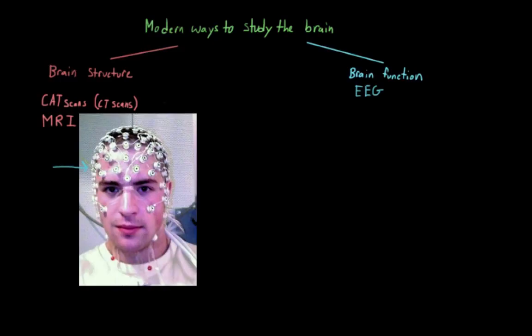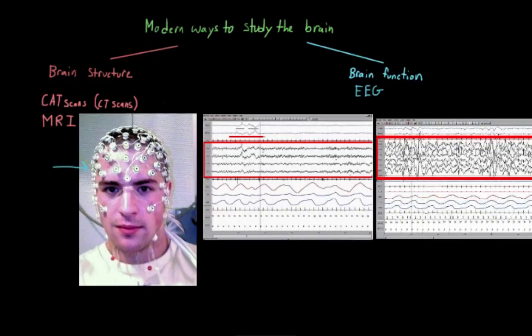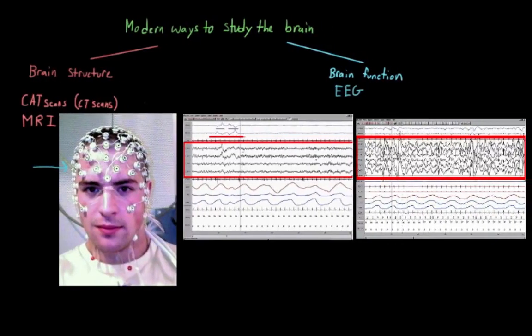Unlike structural methods, like CAT scans and MRIs, we don't get a picture of the brain from an EEG. Instead, we get these wavy lines here. While they might look kind of random to you, this is actually really meaningful for someone who knows how to read them.